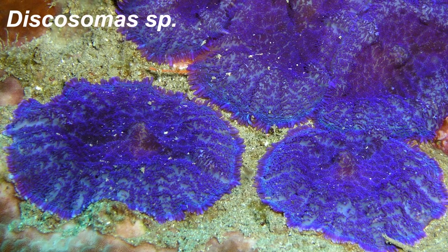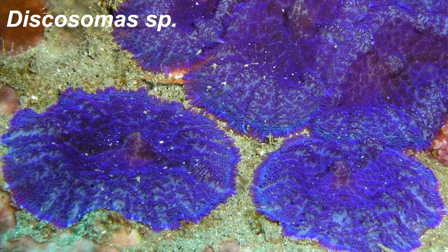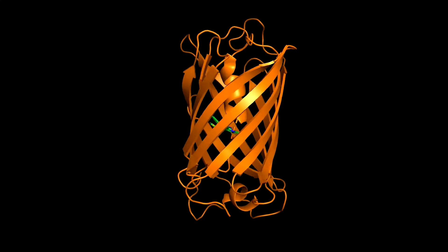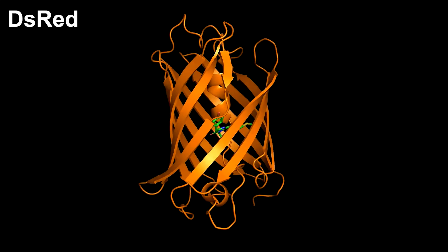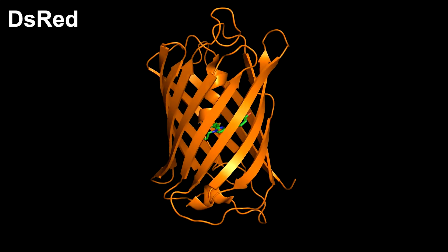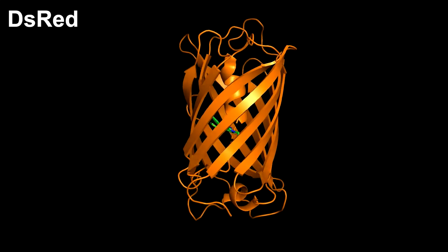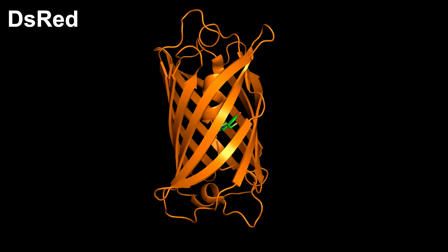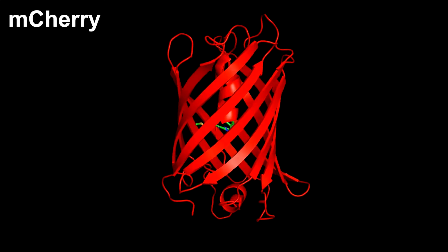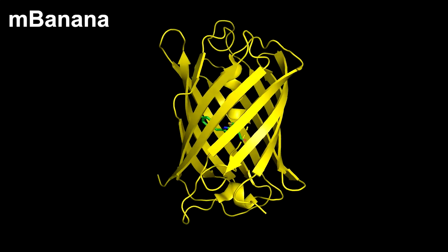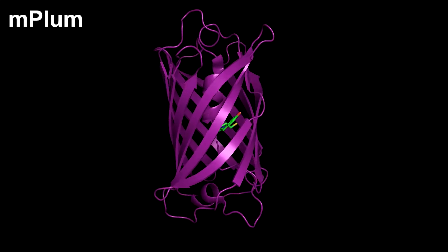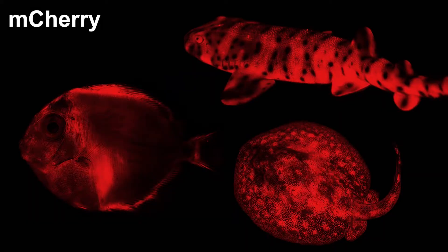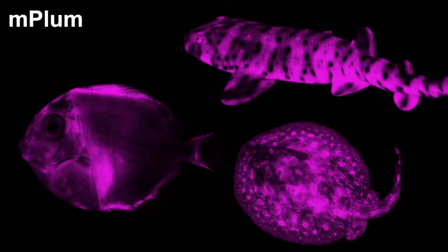A very distant relative of the jellyfish Aequorea victoria, Discosoma species has a different fluorescent protein known as Discosoma red, DsRed. The part of the DsRed gene responsible for the chromophore has also been mutated to give a range of different fluorescent protein colors: mCherry in red, mBanana in yellow, mRaspberry in pink, and mPlum in purple, making it possible to make organisms fluoresce red, yellow, pink, and purple.